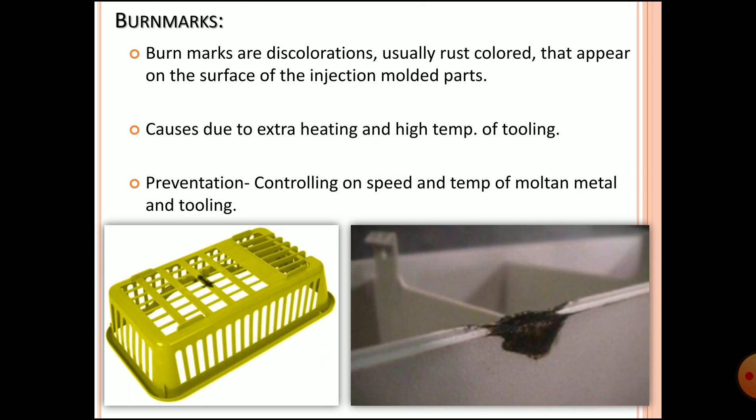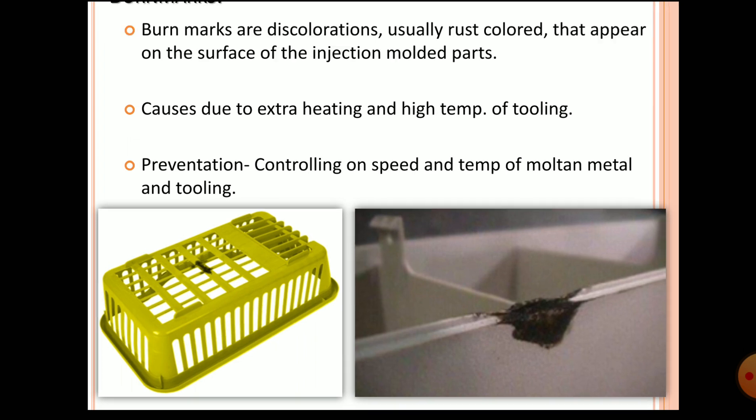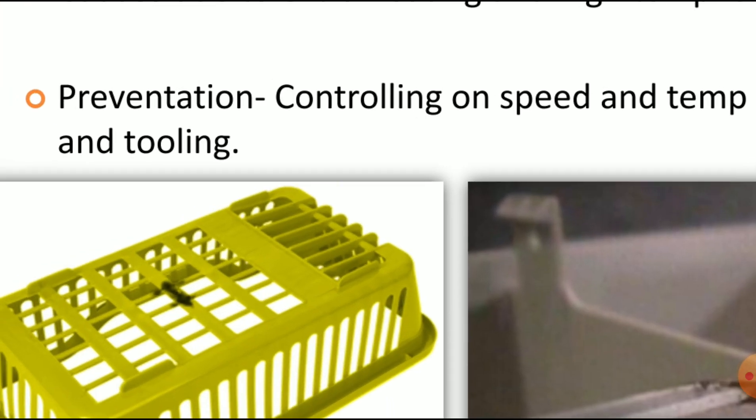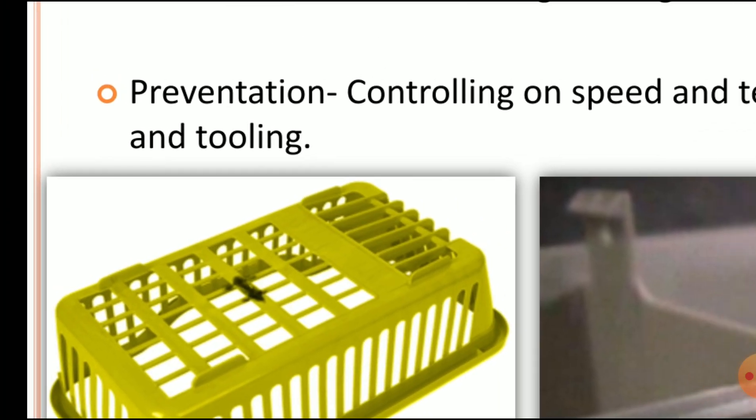The next defect is the burn mark. Burn marks are discoloration — usually a rust color — that appears on the surface of the injection molded part, caused by extra heating and high temperature of the tooling. Prevention: control the speed and temperature of the molten material and the tool temperature. You can see examples of burn marks in the image.